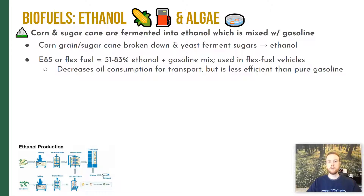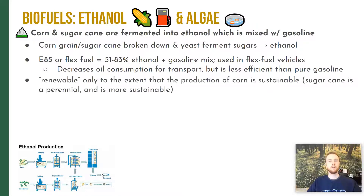Typically ethanol is mixed with gasoline in a mixture called E85 or flex fuel — about 51% to 83% ethanol, with the rest being gasoline — and it can only be used in flex fuel vehicles. It does decrease oil consumption needed for transportation, but since ethanol is less energy-dense than petroleum, you need more E85 to travel the same distance. While this may seem renewable — and it is renewable by definition since corn and sugarcane can be replanted — it's only as sustainable as the agriculture used to produce those crops. If you're degrading soil through intensive tilling and fertilizer use, it won't be sustainable long term.